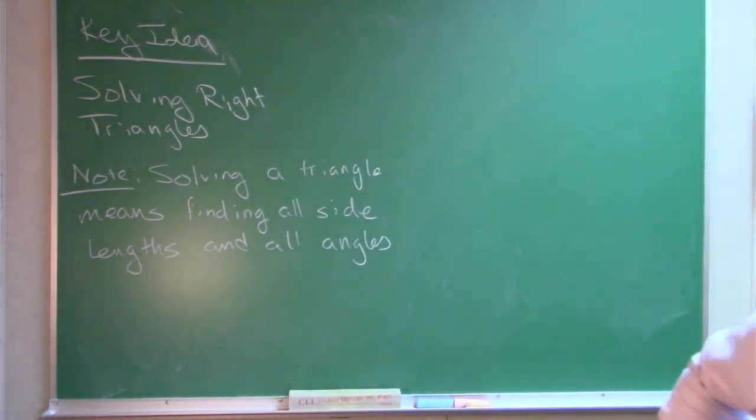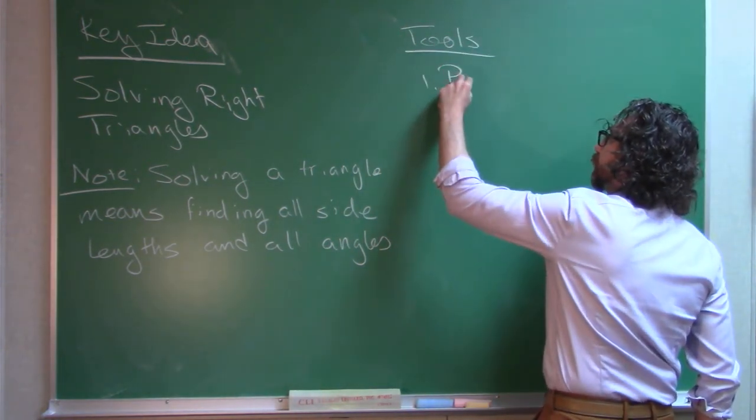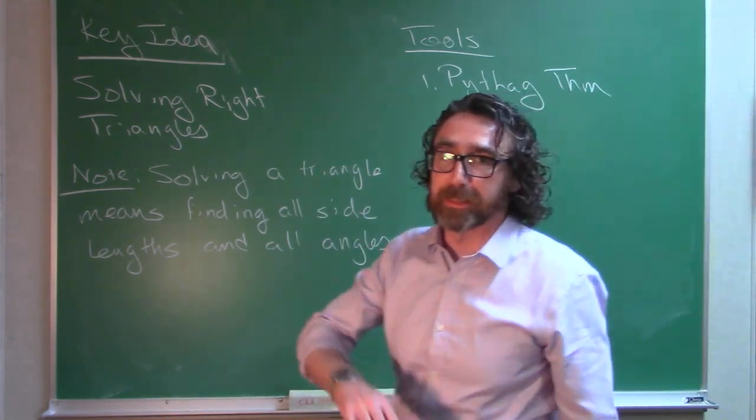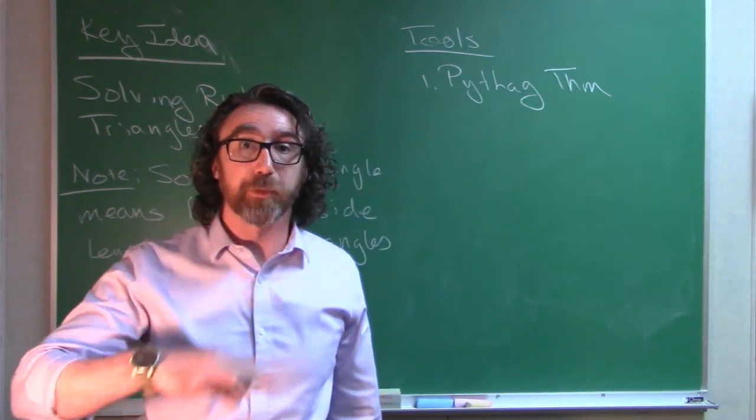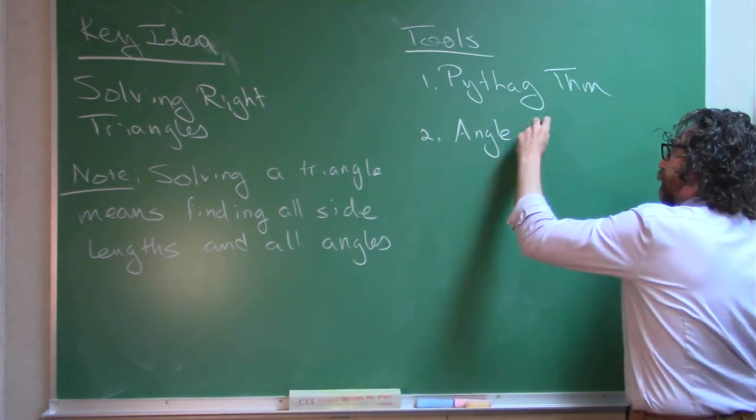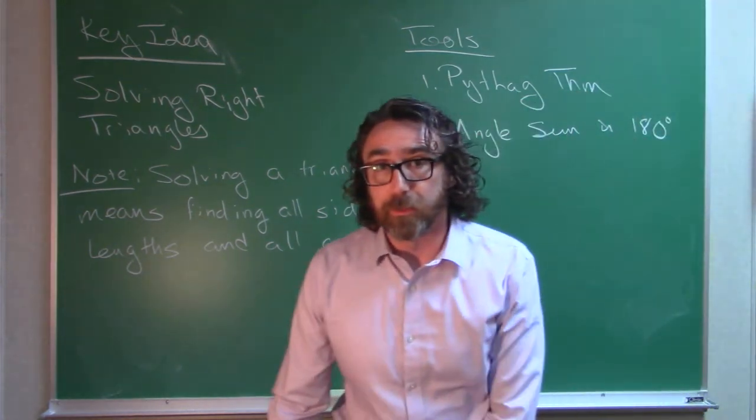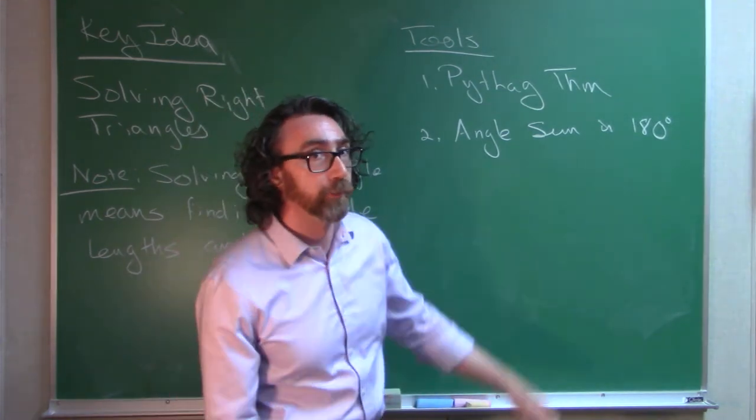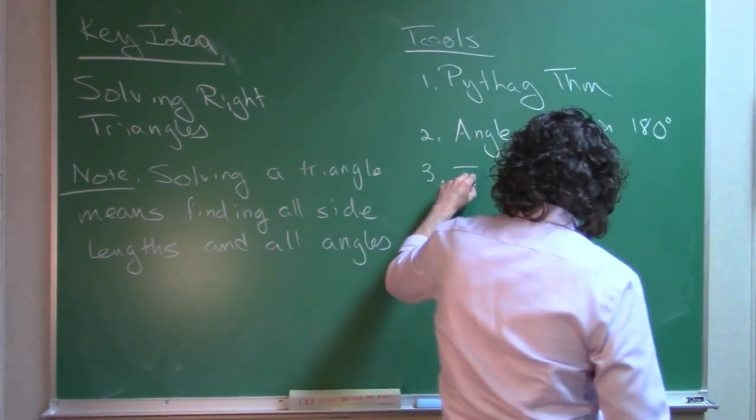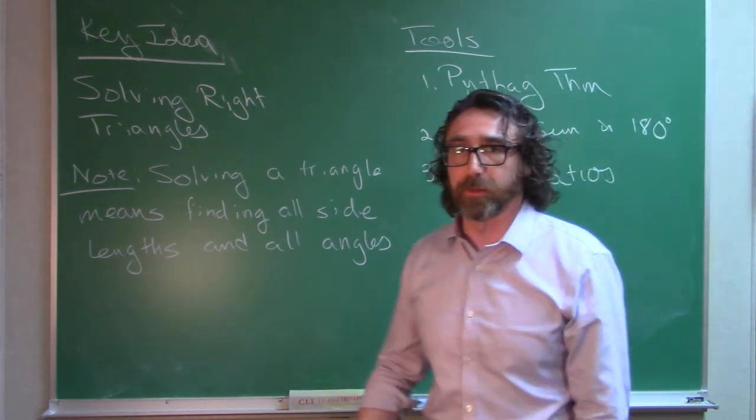Don't forget our tools here. We have some tools at our disposal. Sometimes we'll need to use the Pythagorean theorem. The Pythagorean theorem relates the side lengths in a right triangle, and if you know any two of them, you can figure out the third. Another tool that we have is the angle sum. In any triangle, the angle measures have to add up to 180 degrees, so that means if we know any two of the angles, we can get the third one. And the third tool will be the trig ratios that we've been talking about in our course.